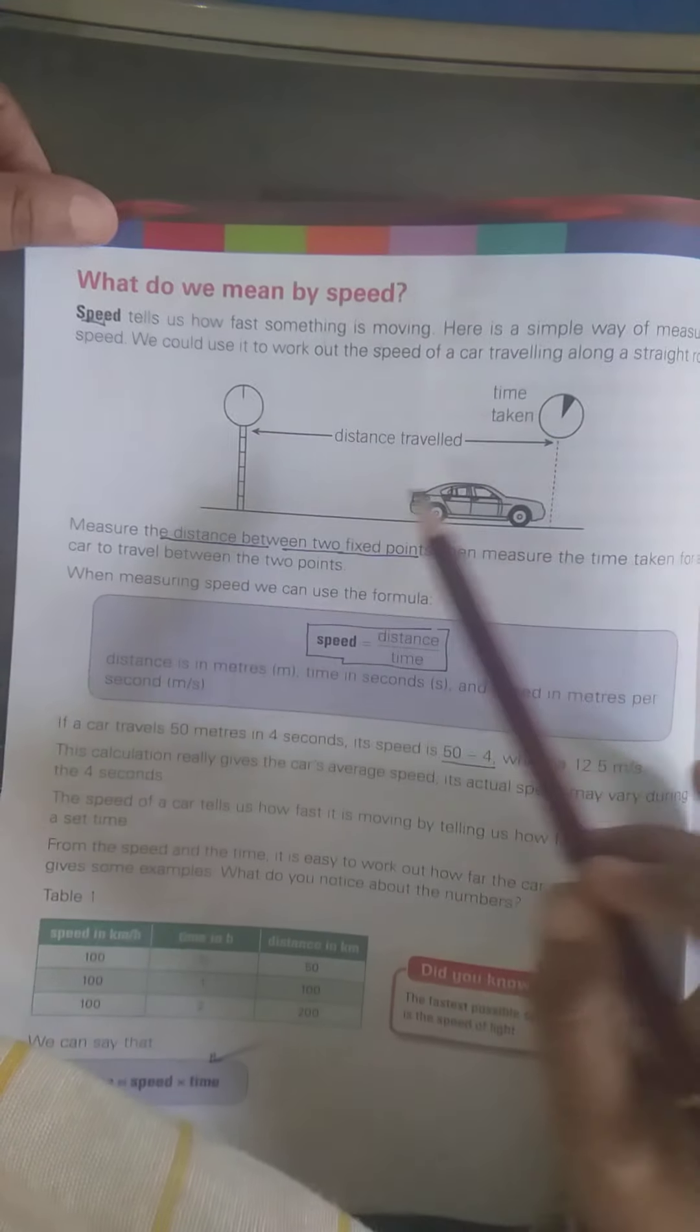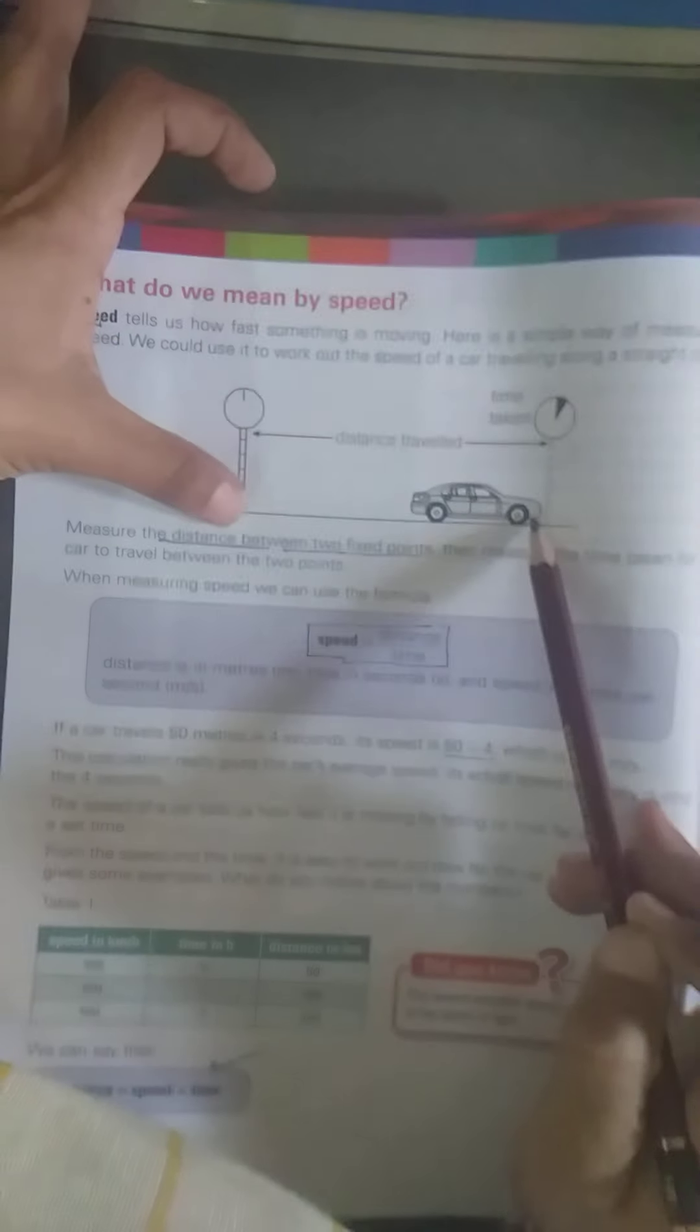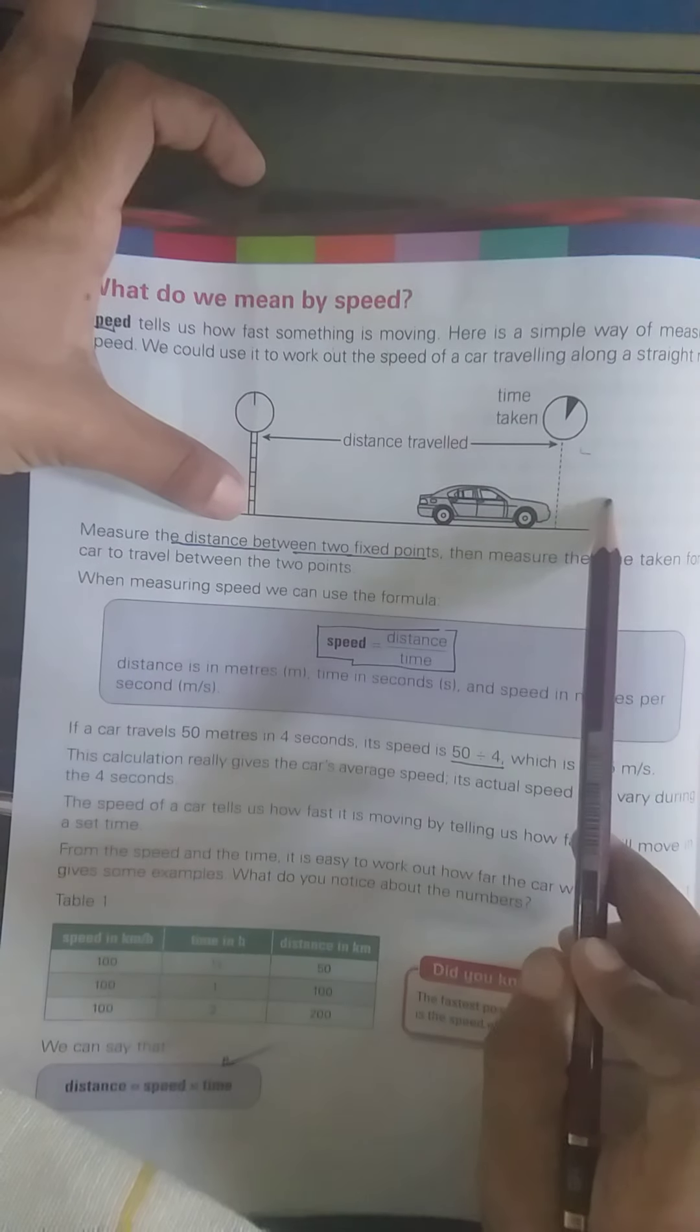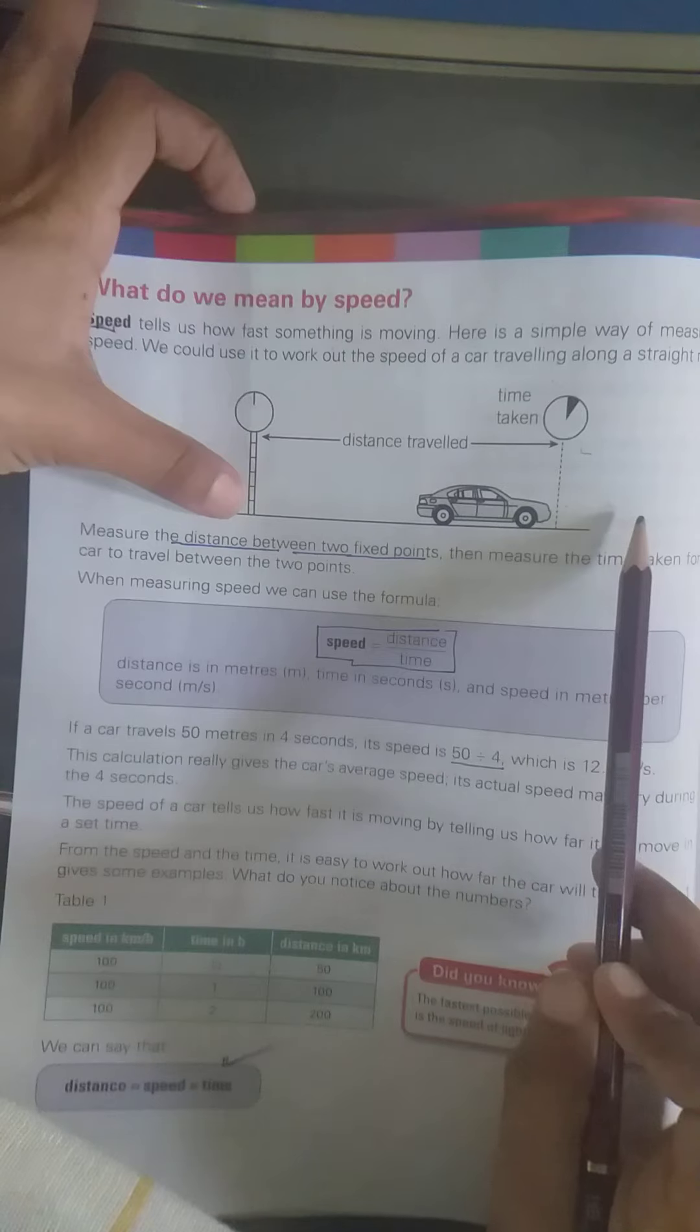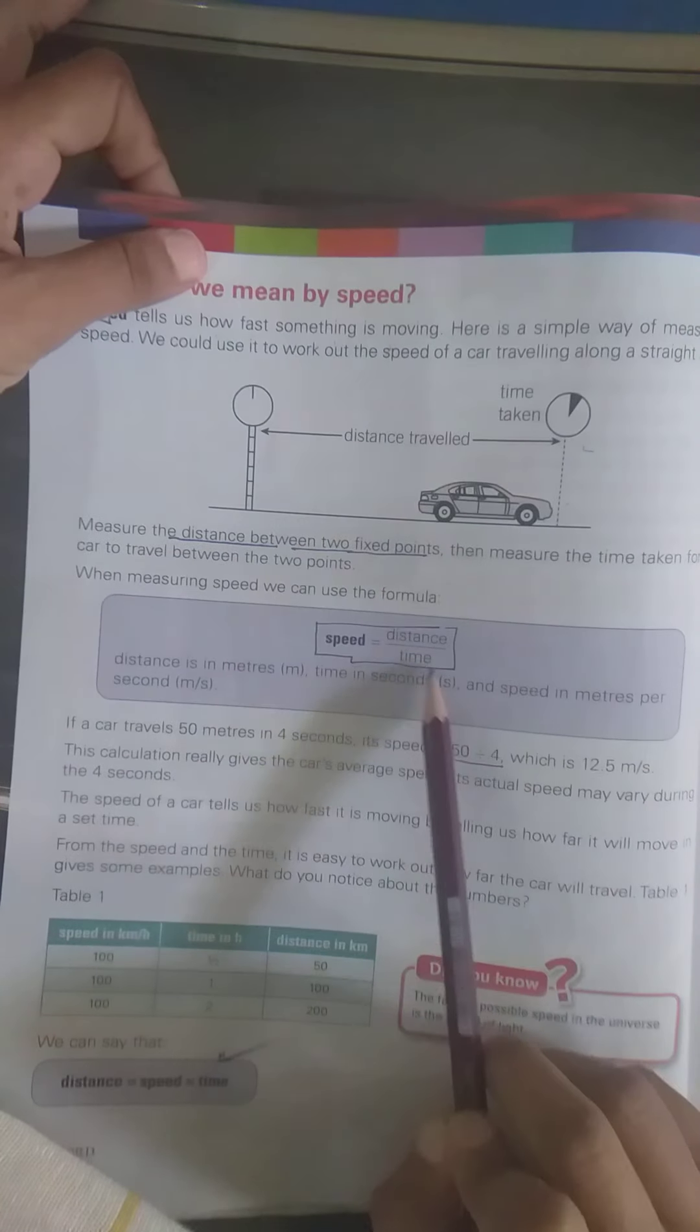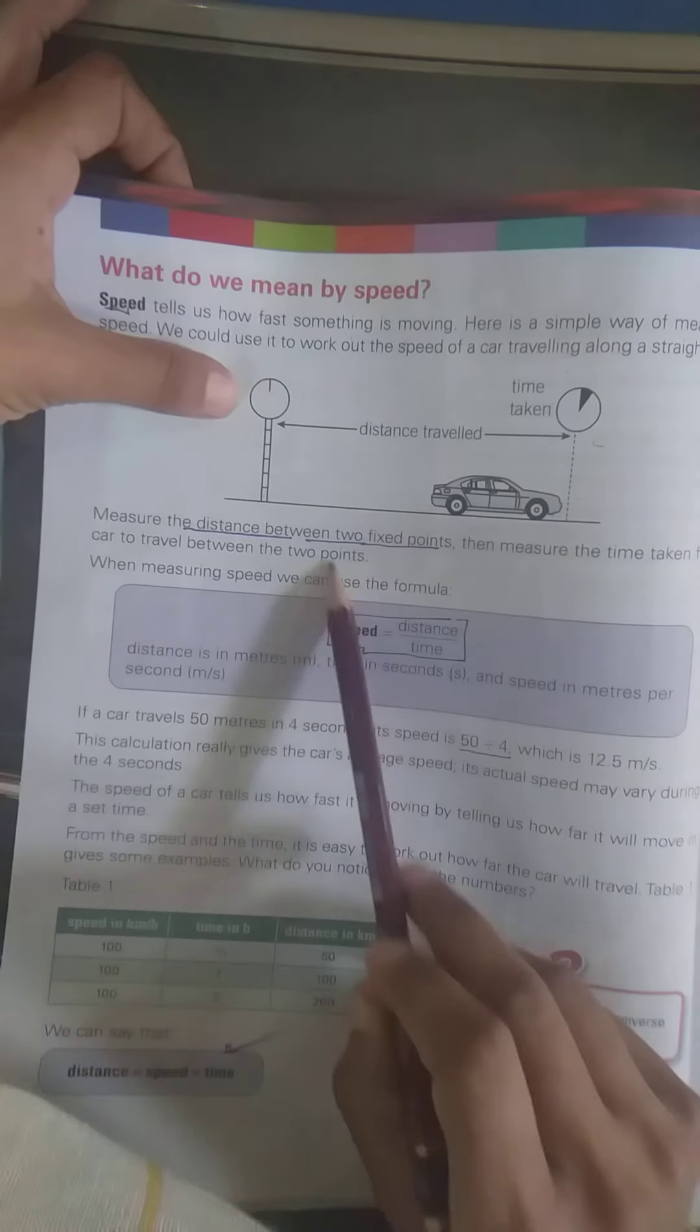Ab joh measure the distance between two fixed points. Yeh fixed point yeh hai, dousari fixed point yeh hai. Ab joh me measure karna hai ke yeh two points pe kitana car travel kar rahi hai. Ab joh formula use karthay hai, speed is equal to distance upon time.